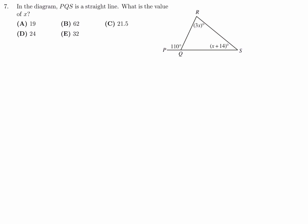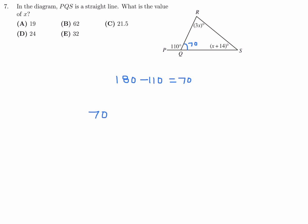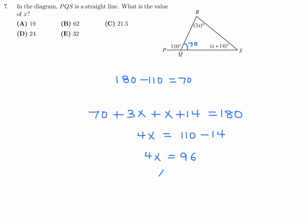In the diagram, PQS is a straight line. What is the value of X? This is 110. Since all the angles about a line equal 180, this angle in here must be 180 minus 110, and that means that's 70 degrees. So now we have 70 plus 3X plus X plus 14, and those three angles will equal 180. Solving this algebra: 4X is equal to 110 minus 14, so 4X is equal to 96, and therefore X is equal to 24.